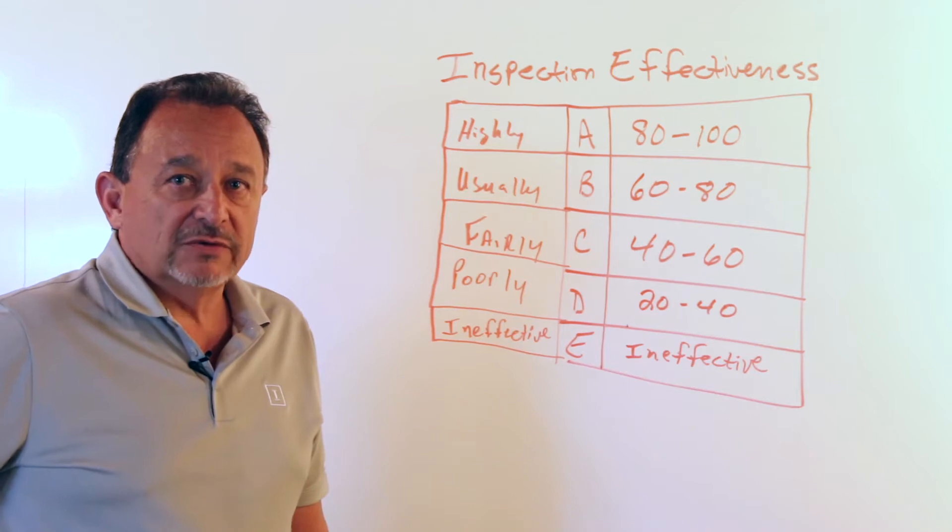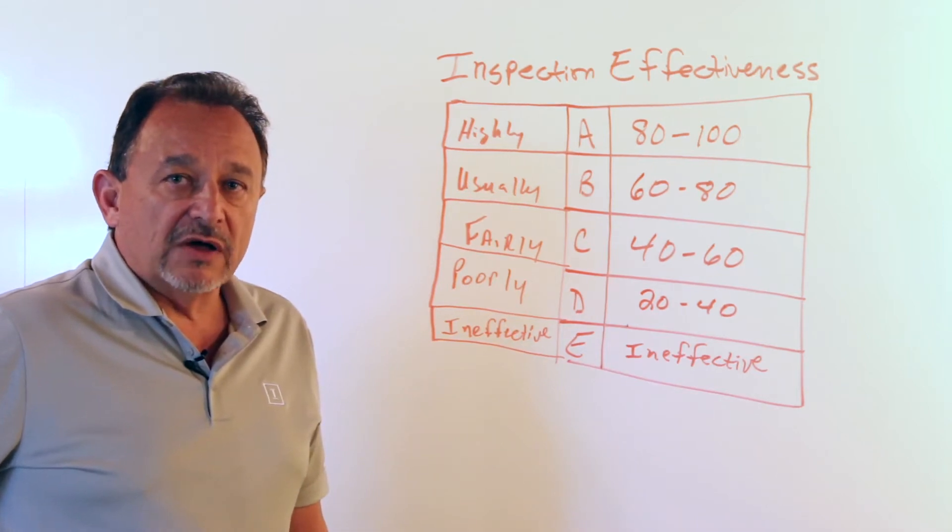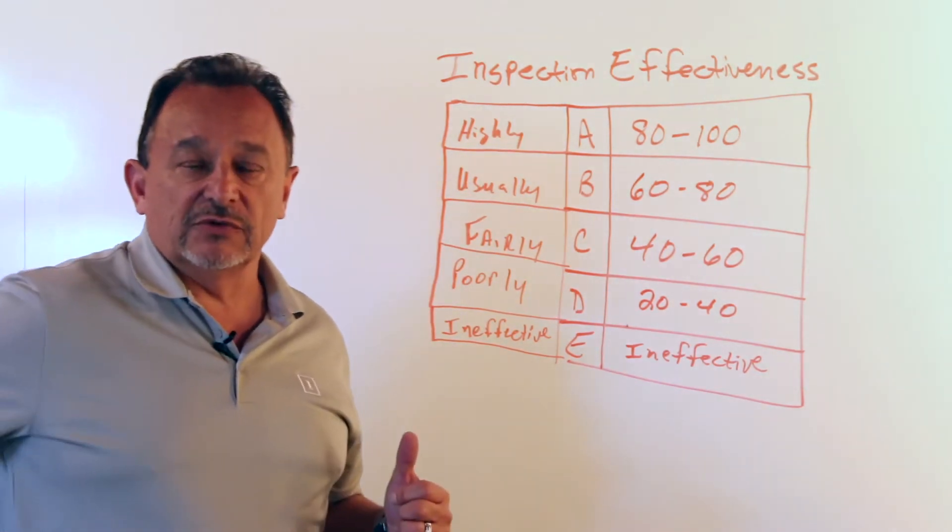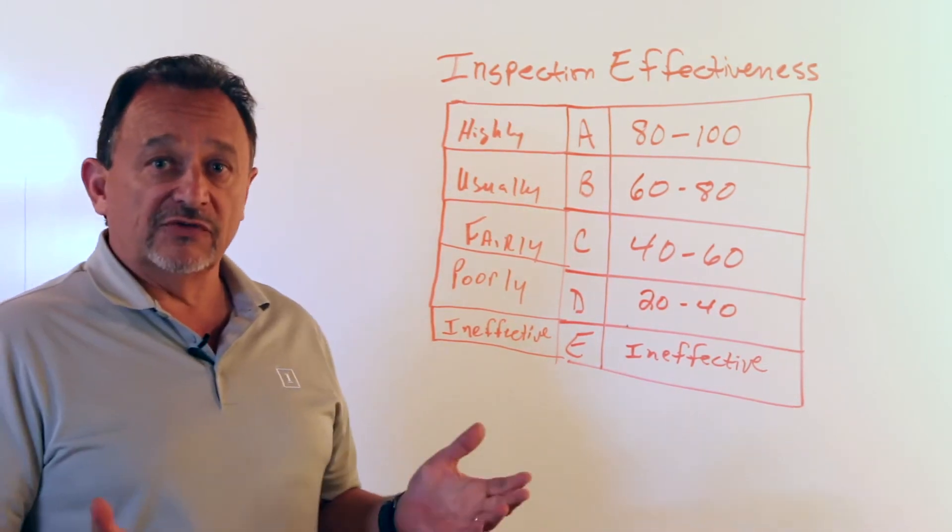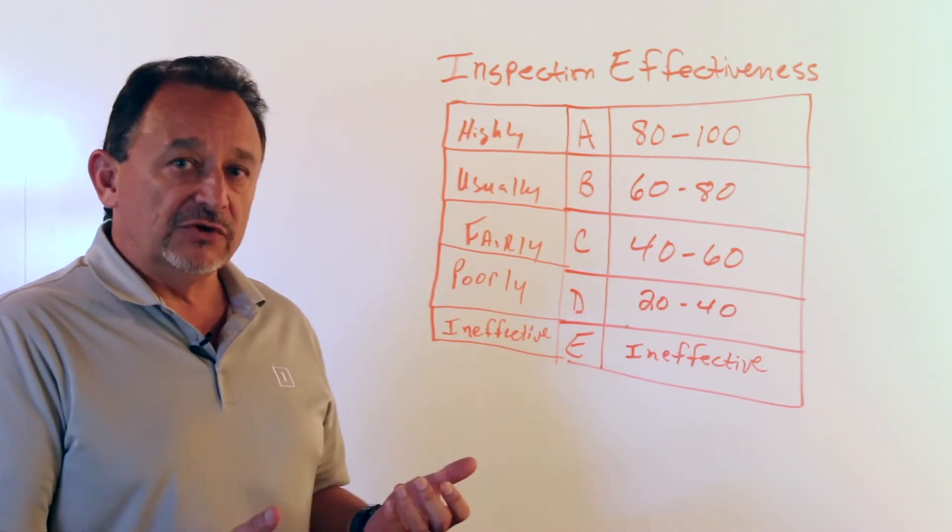Hi, I'm Greg Alvarado and today we're going to talk about the inspection effectiveness tables in API RP 581 and the importance of those tables and how you should view those tables.